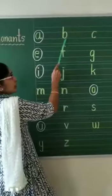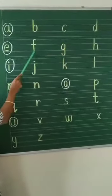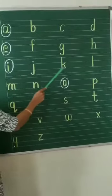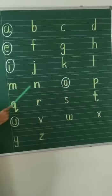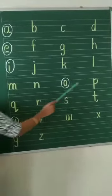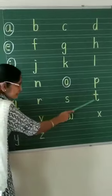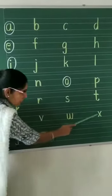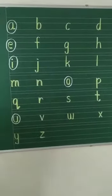The consonants are: B, C, D, F, G, H, J, K, L, M, N, P, Q, R, S, T, V, W, X, Y, and Z.